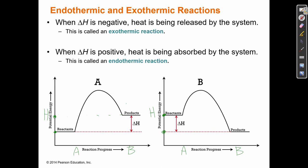When the products have more potential energy than the reactants, the system gained energy—energy is being absorbed, so this is endothermic. On the other diagram, A goes to B and the products have less energy than the reactants; energy is going down. That energy difference—delta H—is being released by the system as heat, so we call this exothermic.